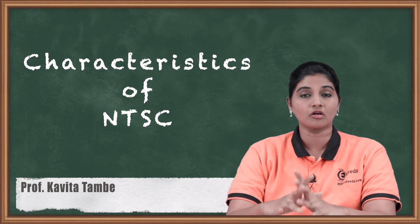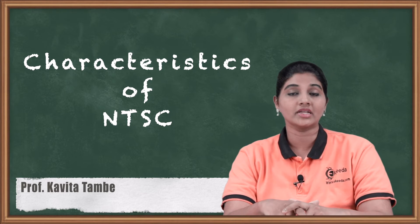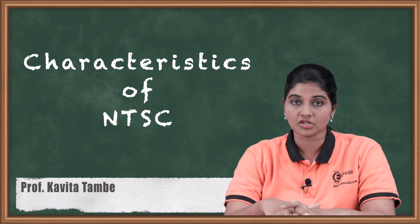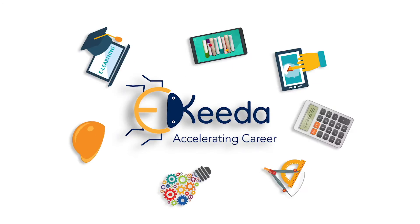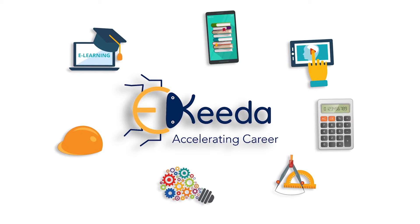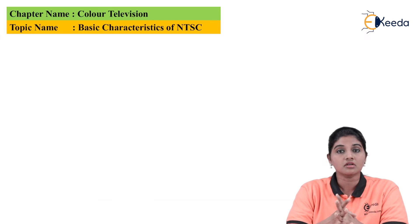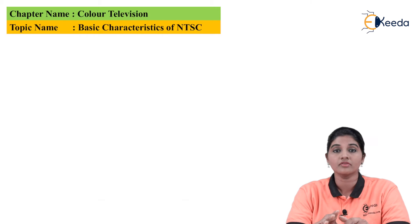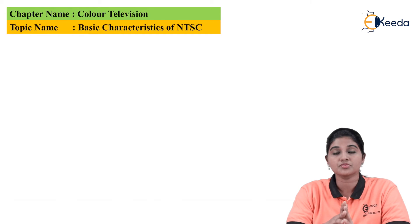In this video we are going to talk about the basic characteristics provided by the NTSC system, specified as the American standard for television transmission. There are three different standards defined for color television: NTSC, PAL, and SECAM, defined by America, European standard, and German standard respectively.